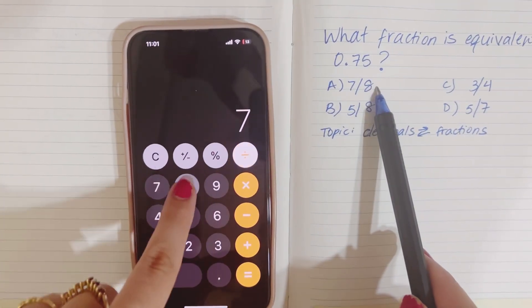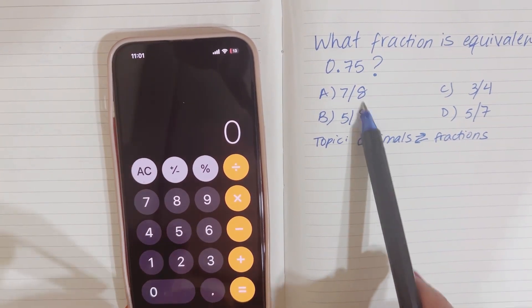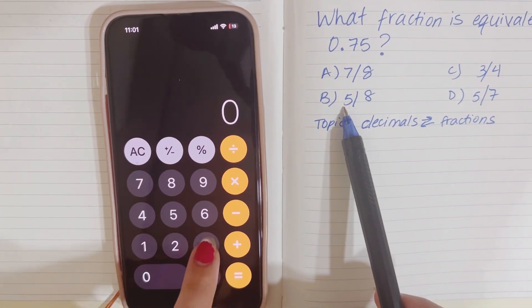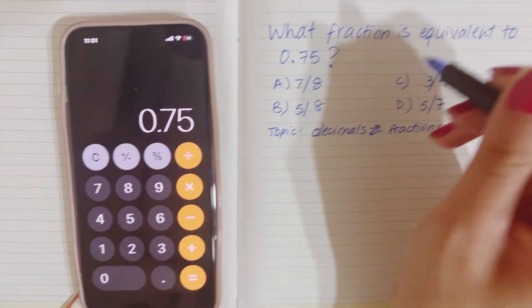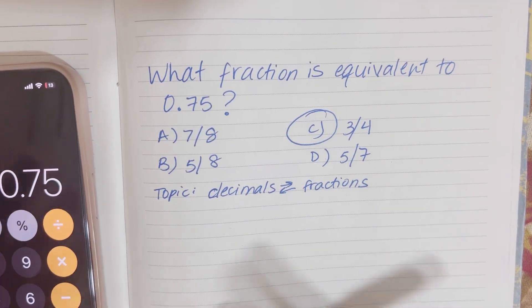You do 7 divided by 8, 0.875. That's not the answer. 5 divided by 8, 0.625. Nope. And you do this, and that's the answer. So that's one trick you would use, just because remember, you have a calculator, use it.